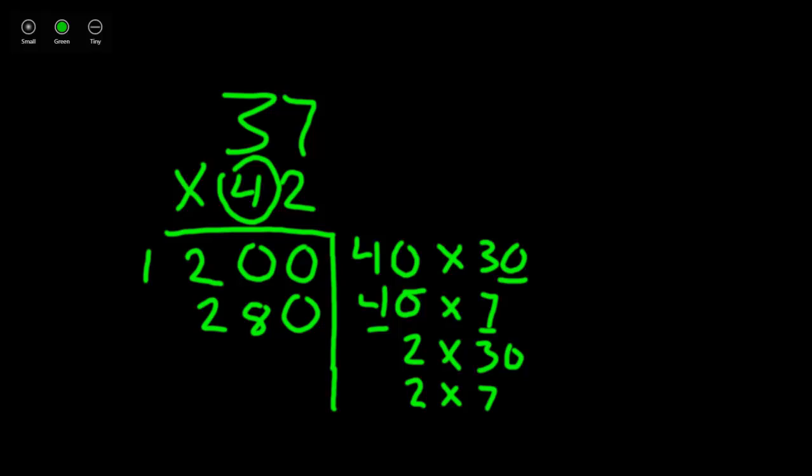Our next problem, 2 times 30. Our simple problem is 2 times 3. We see we have a 0 to add in. Put my 0 in first just to make sure my columns are lined up neatly. Then I have 2 times 3 is 6. Now our last problem has no 0's to add in. The answer to 2 times 7 is 14.